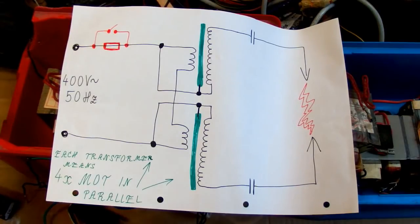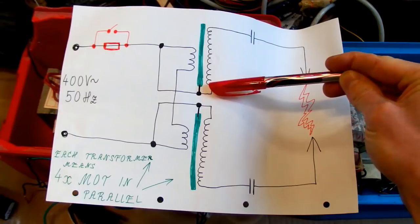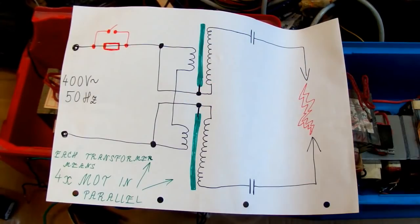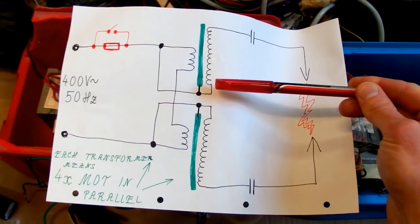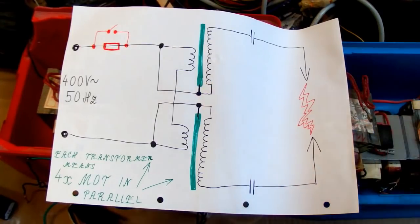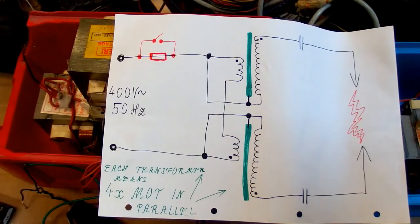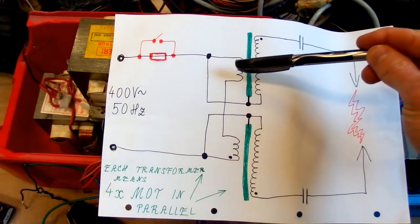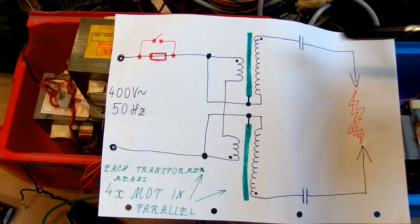I also have to say that microwave oven transformers have one end of the secondary connected with the core. But it's better to leave it as it is because on this side the isolation on the secondary can be quite poor. The other end of the secondary has better isolation. And of course the directions of the windings are so that the input voltage is adding to the secondary, not subtracting.